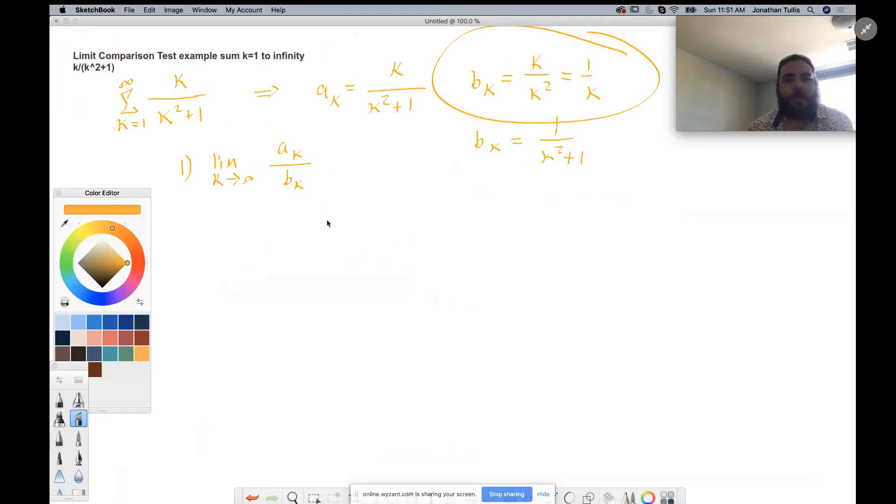Let me get a different color here. That's going to be equal to k over k squared plus one divided by one over k. And then by the reciprocal property, this will come up here and multiply with the k.